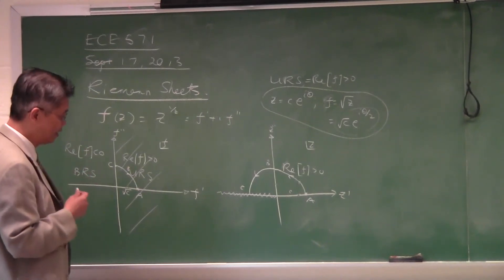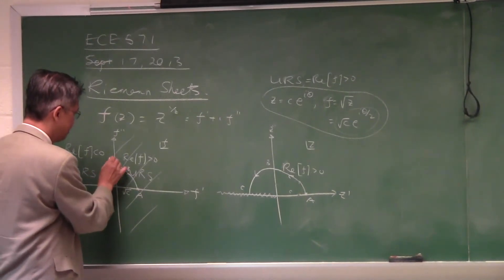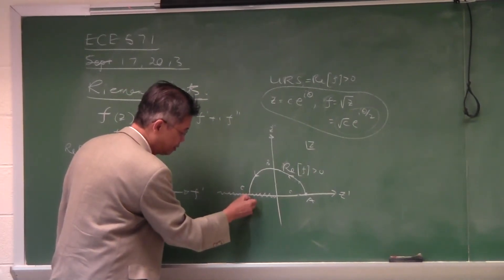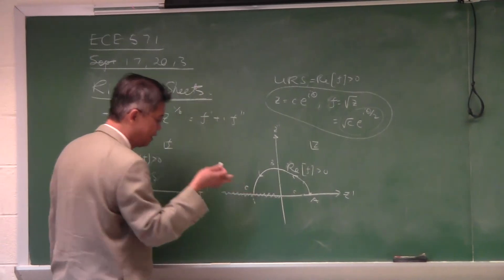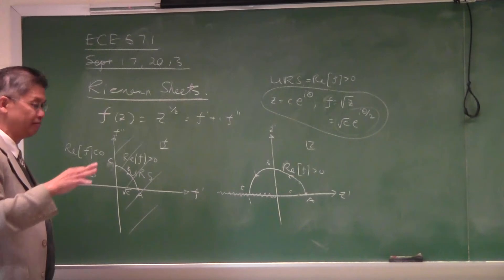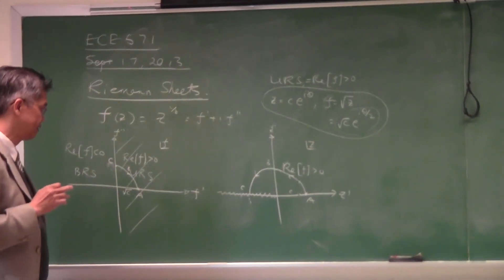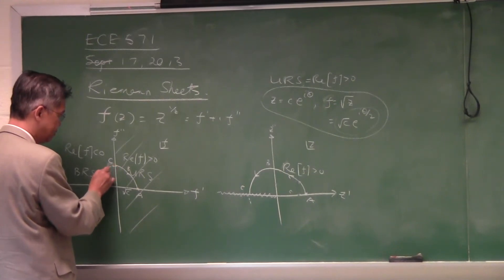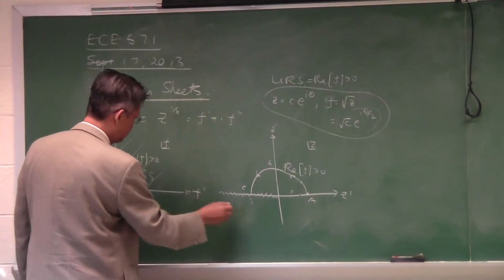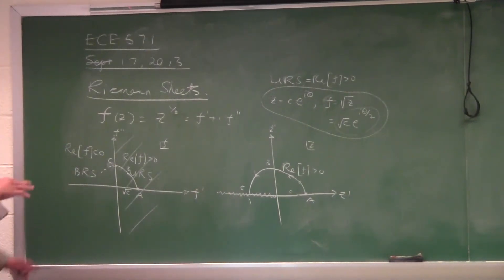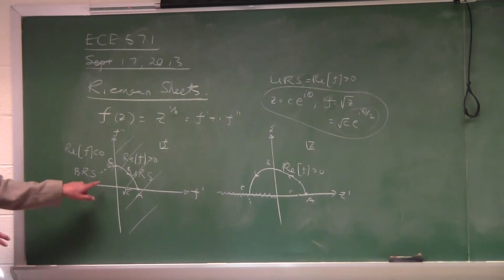So I would rather say: if I want to maintain continuity, I might have to go to the bottom Riemann sheet and go below the branch cut. Instead of jumping over it, I go below it, as denoted by that sheet over there. The mapping will continue in this manner. If you stay below the branch cut, it will maintain continuity — the function does not have a discontinuity here.